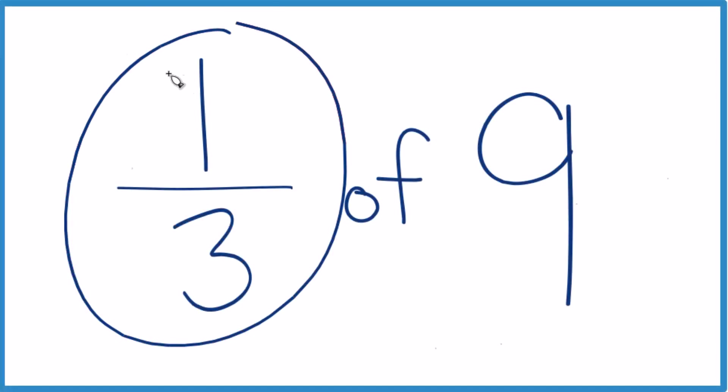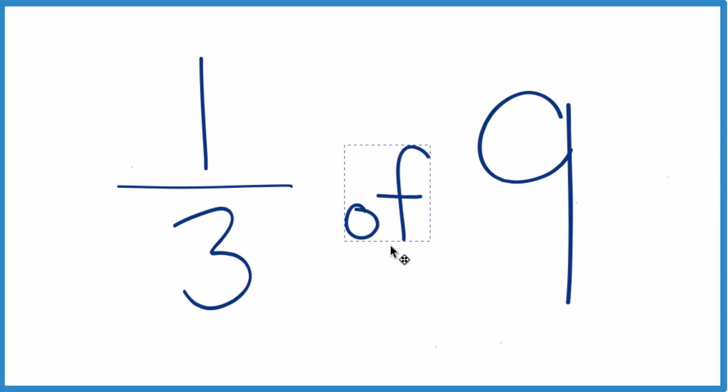So say you want to find one-third of nine. How do you do that? Probably the easiest way to look at this is instead of of, let's take of and put multiplication in.